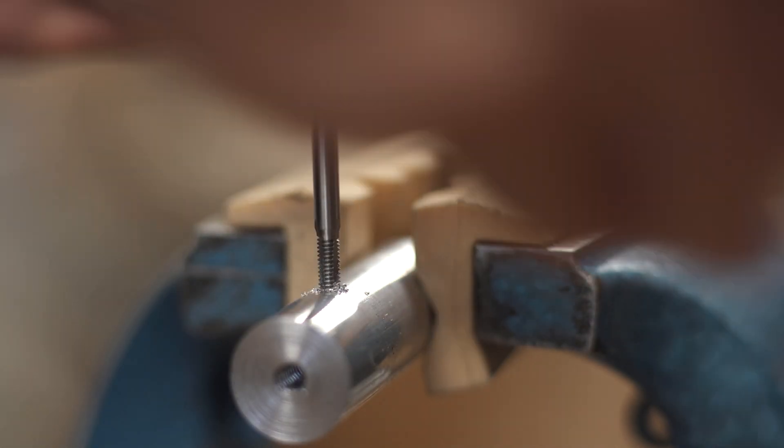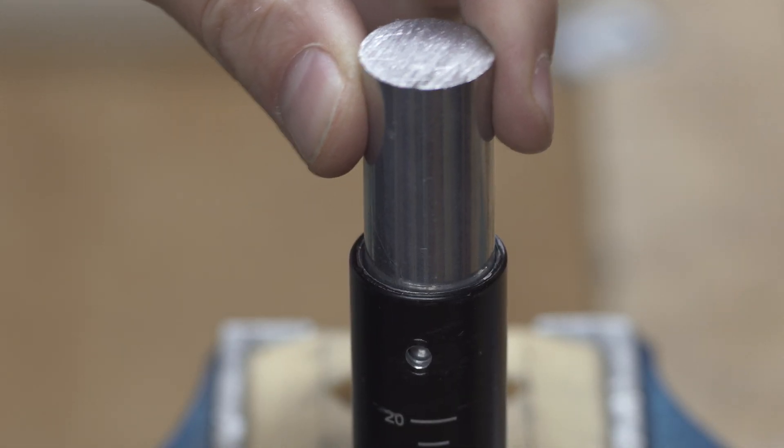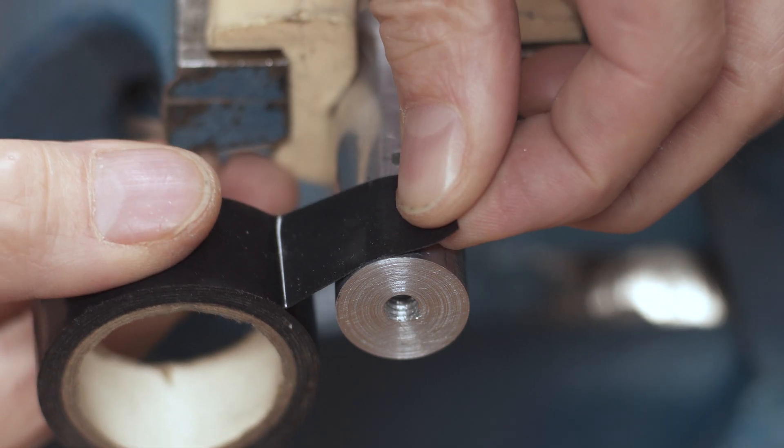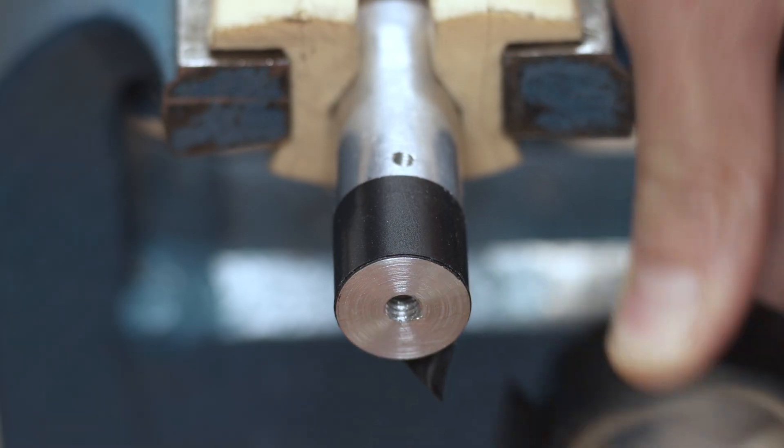To make sure we mark the right spot for the second hole, we have to stop this from wriggling. A bit of tape should do the trick.